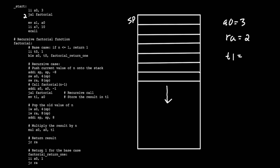If n is less than or equal to 1, we jump to the factorial return label down here. So we load the value 1 into register T0, then perform the test: is A0 less than or equal to T0? T0 is 1 and A0 is 3, so that's not true — we will not jump. Instead, we'll continue with the program flow. The first thing we do is decrement the stack pointer by 8, so that's 4 and 8 bytes. Stack pointer comes down there.